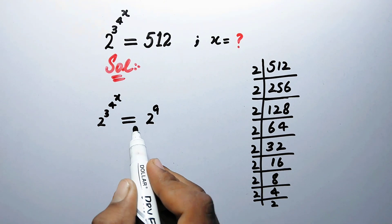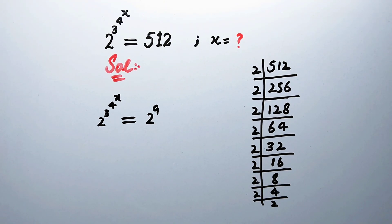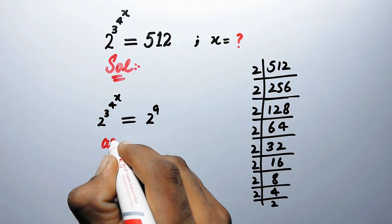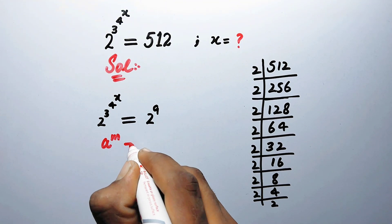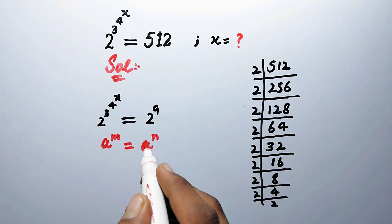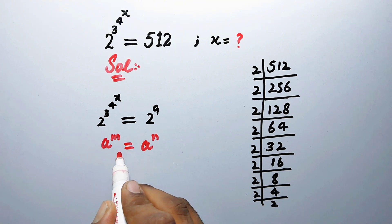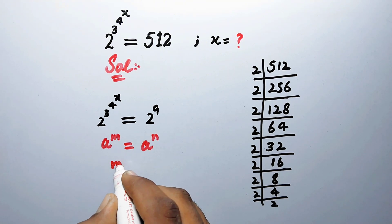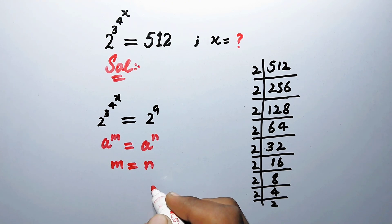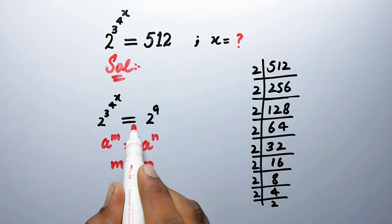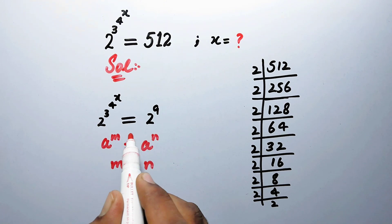Now we can apply a property of exponents: if a to the power m is equal to a to the power n, and the bases are the same on both sides of the equation, then by comparing we get m equal to n. We can see that the bases are the same on both sides here.